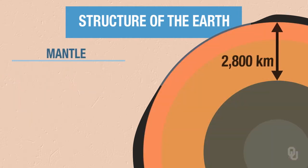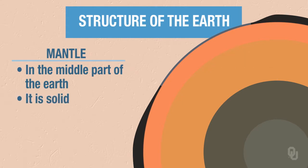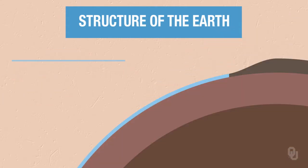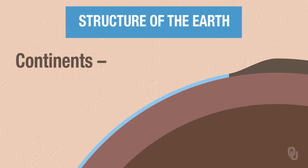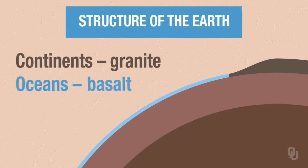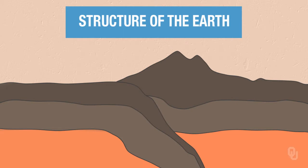The mantle is 2,800 kilometers thick and is in the middle part of the Earth. It is solid. The outer part of the Earth is the crust — it's thin, ranging from around 5 kilometers in the oceans to approximately 70 kilometers underneath the continents. The continents are made of granite and the oceans are made of basalt. We'll now focus on the upper part of the mantle and the crust.